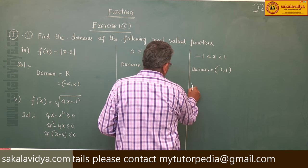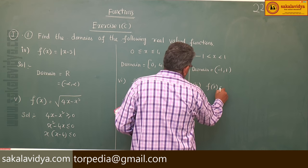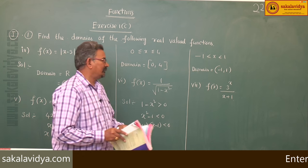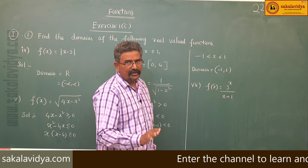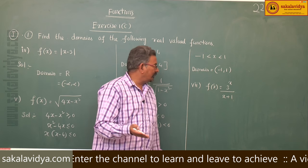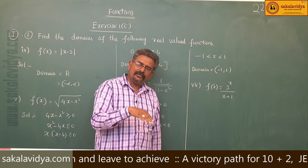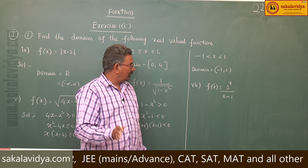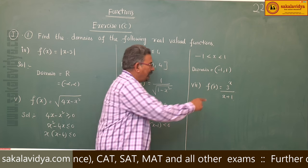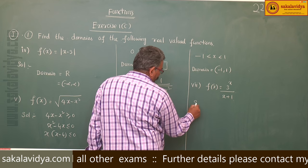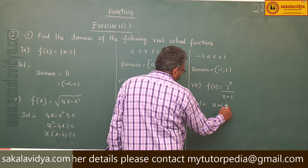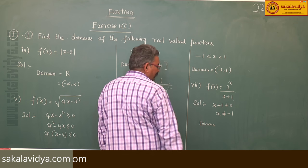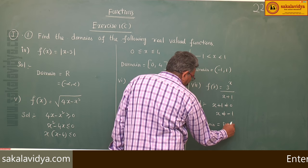Seventh problem: f of x is equal to 3 power x by x plus 1. This is a rational function f(x)/g(x). The domain is the intersection of the domain of 3 power x and the domain of x plus 1. The domain of 3 power x is all real numbers ℝ. For x plus 1 in the denominator, x plus 1 must not equal 0, so x must not equal minus 1. Therefore, domain is equal to ℝ minus {−1}.